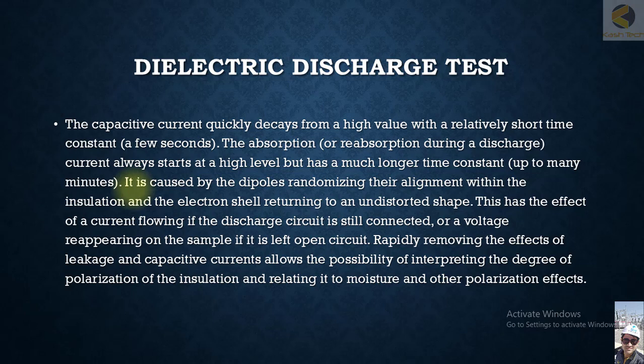The capacitive current quickly decays from a high value with a relatively short time constant of a few seconds. The absorption or reabsorption discharge current always starts at a higher level but has a much longer time constant — up to many minutes. It is caused by dipoles randomizing their alignment within the insulation and the electron shell returning to an undistorted shape.